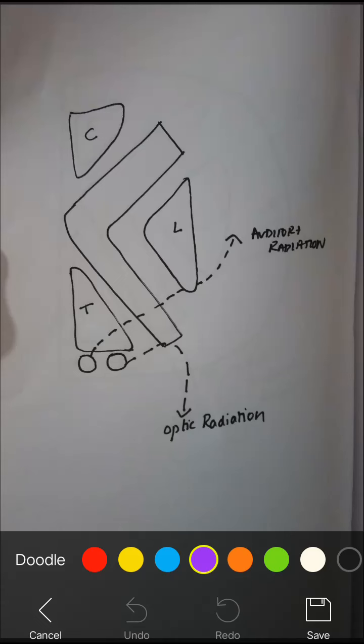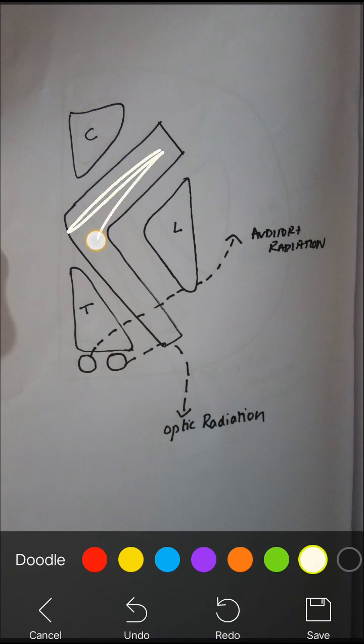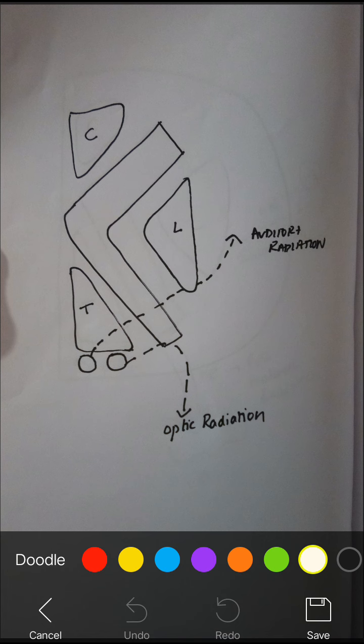Hello friends, Danvin here. Let's quickly discuss the internal capsule. The internal capsule is a collection of white fiber system through which all the projection fibers pass — both ascending and descending fibers pass through the internal capsule.